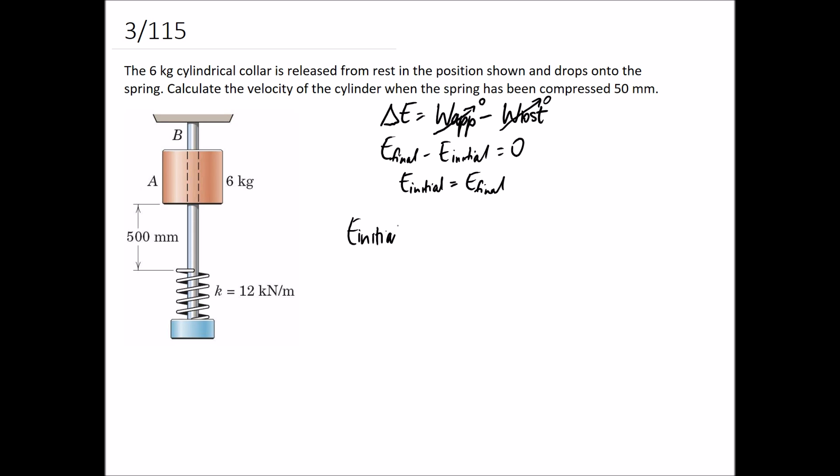At the beginning, we may have kinetic energy, potential energy due to gravity, and potential energy due to the springs. The initial position is when it's up the top here, and we're told that it is released from rest. That means it's got no initial velocity and no kinetic energy either, so we can get rid of this term.